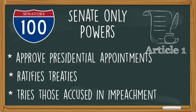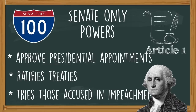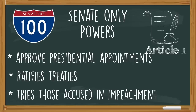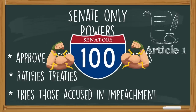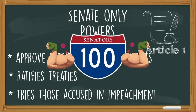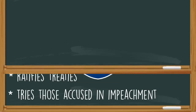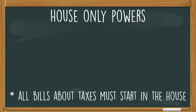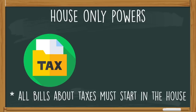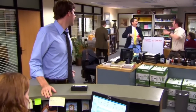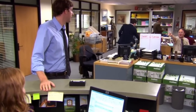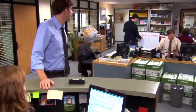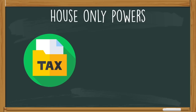Senators get to try those accused in impeachments, and this includes the president of the United States. That is some serious firepower that these senators have that members of the House really can't do — they don't have very much interaction with the president and can't check the president's power. But here's what the House can do that senators cannot: any bill that's about taxes has to start in the House of Representatives. It's not a great power to have, but it's something they can do that the Senate can't.